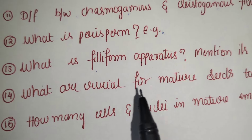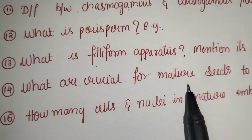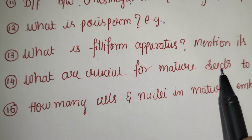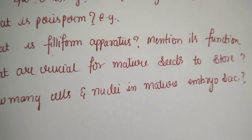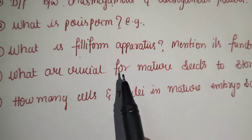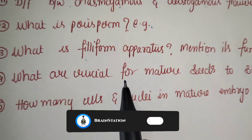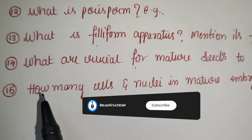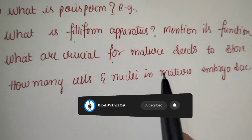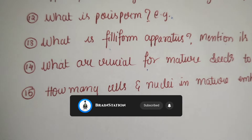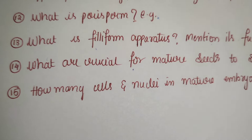Crucial for mature seeds to store food: dormancy and dehydration. How many cells and nuclei are present in a mature embryo sac? 8 nuclei and 7 cells.